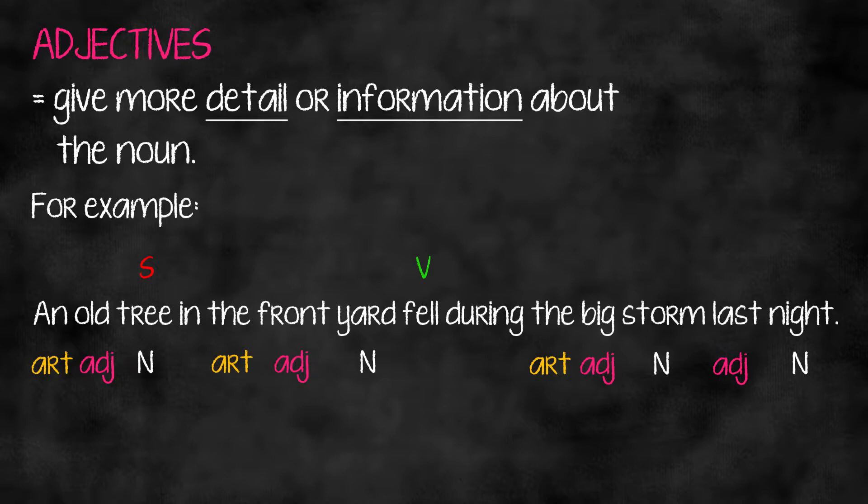We have another noun: 'storm' is a noun. 'Big' is an adjective which gives us information about the storm. 'The' is an article which refers to 'storm.' 'Night' is a noun, and 'last' is an adjective.